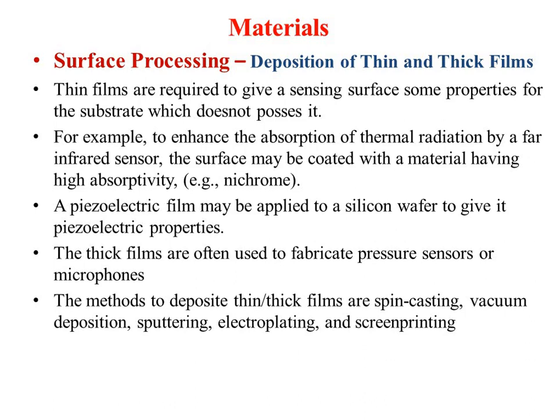The methods to deposit thin or thick films are: spin casting, vacuum deposition, sputtering, electroplating, and screen printing. These are the methods by which you can deposit a thin film on a substrate.